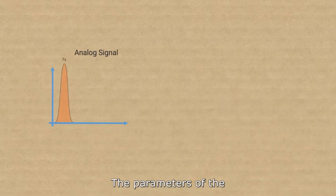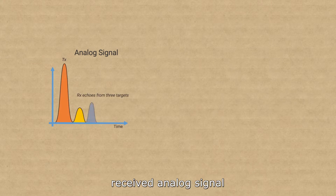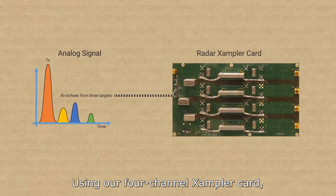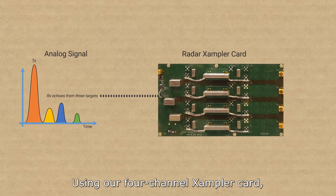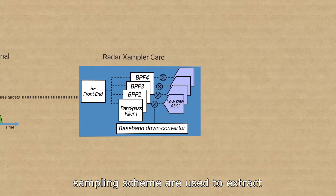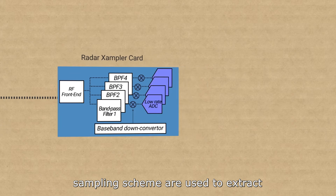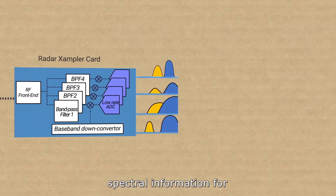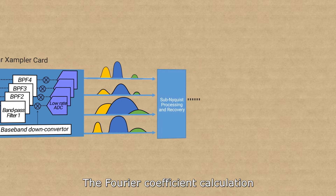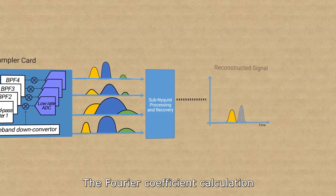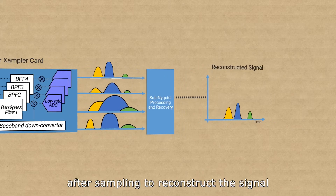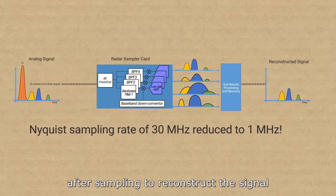The parameters of the received analog signal are embodied in its Fourier coefficients. Using our four-channel sampler card, multi-channel analog processing and a low-rate sampling scheme are used to extract spectral information for specific frequency bands. The Fourier coefficient calculation is then performed digitally after sampling to reconstruct the signal.